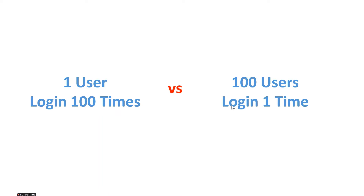The second test case is we have 100 users, 100 credentials, but login only one time. Both test cases create 100 requests, but is it exactly the same? The answer is no, because for the case of one user logging in 100 times, maybe the second request, the third request, and so on will be served from the cache. So the second test case — 100 users login one time — is more realistic, it's closer to the real-life scenario.